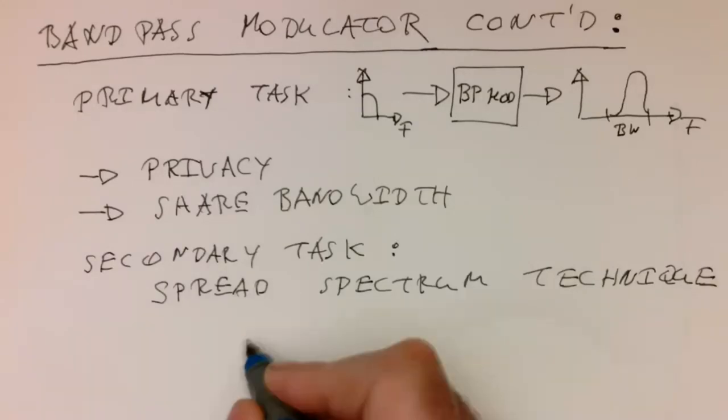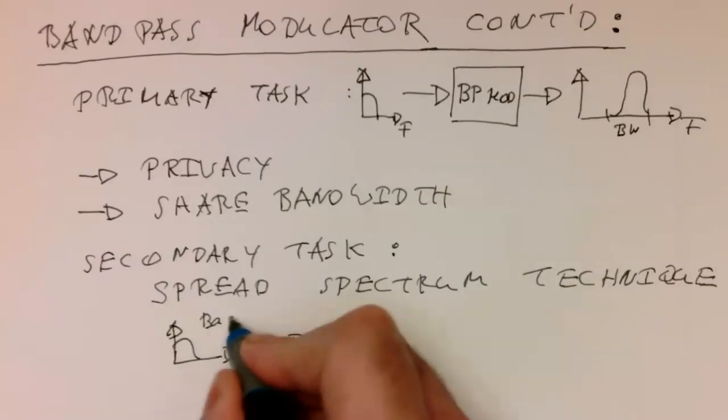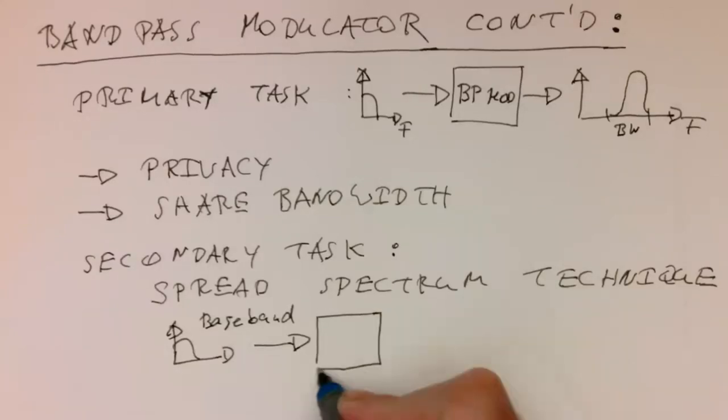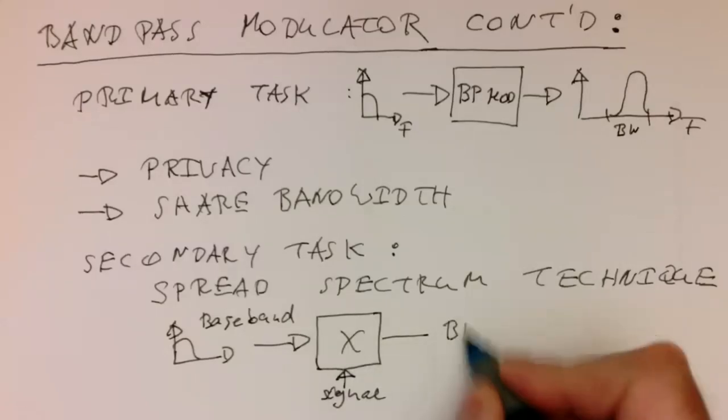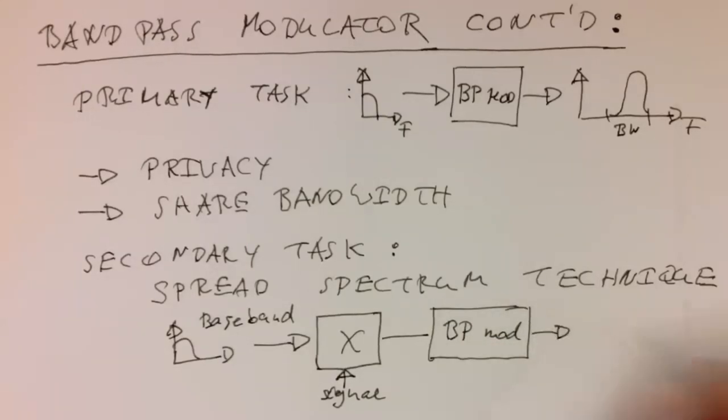This is done in the way that, again, that's our baseband here. This baseband is modified before we send this in the actual bandpass modulator. And then this one is sent into our bandpass modulator, and with that we are getting a wider spectrum.